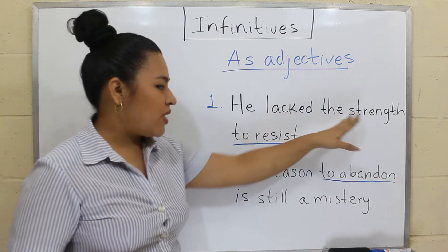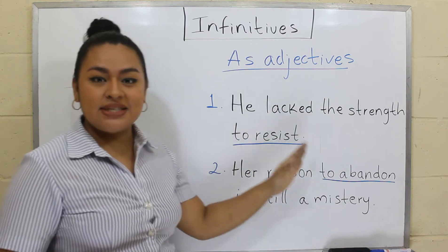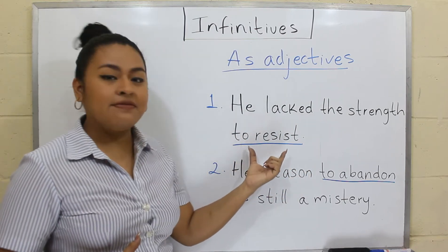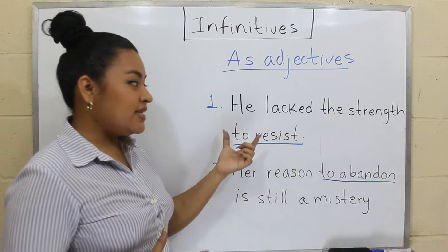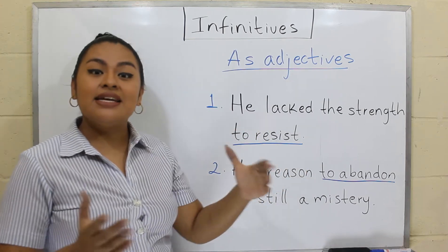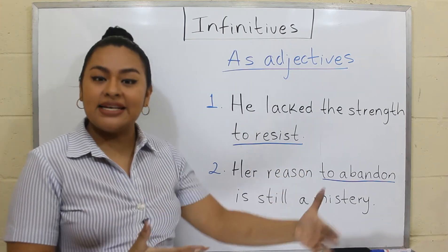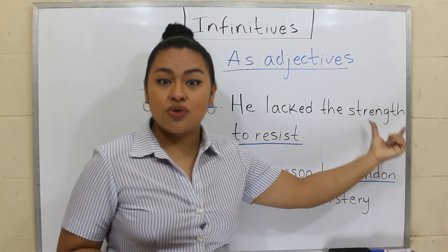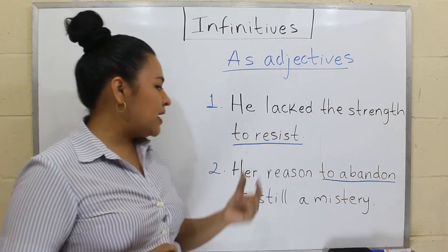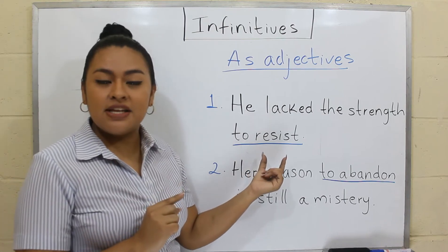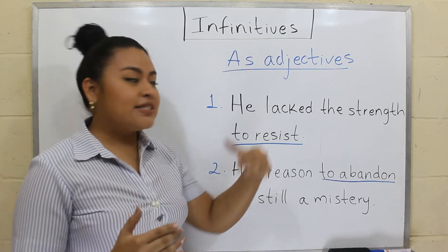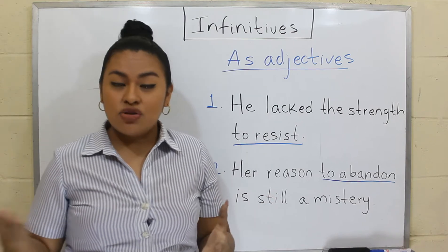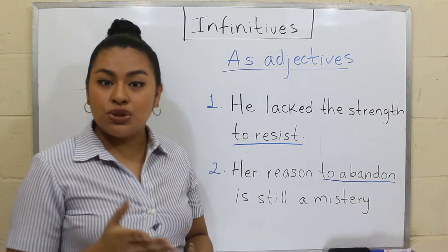So let's see the examples. 'He lacked the strength to resist.' In this example, we have the infinitive 'to resist.' This infinitive is acting as an adjective because it is modifying the noun 'strength.' And as you can see, the position of this infinitive is after the noun, not before, as we said that normal and regular adjectives do.